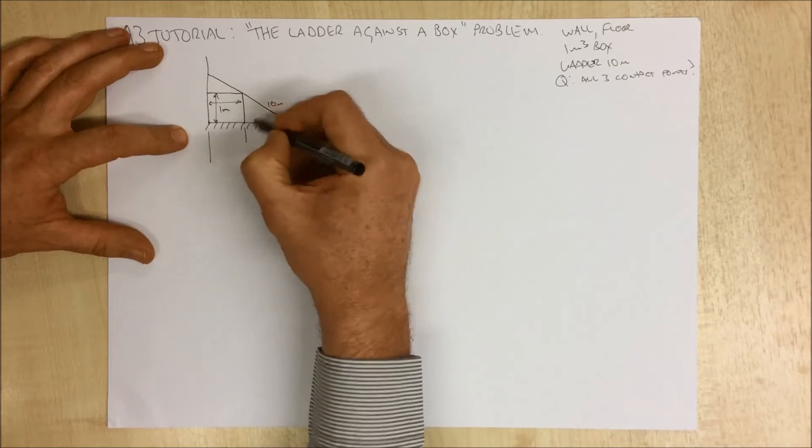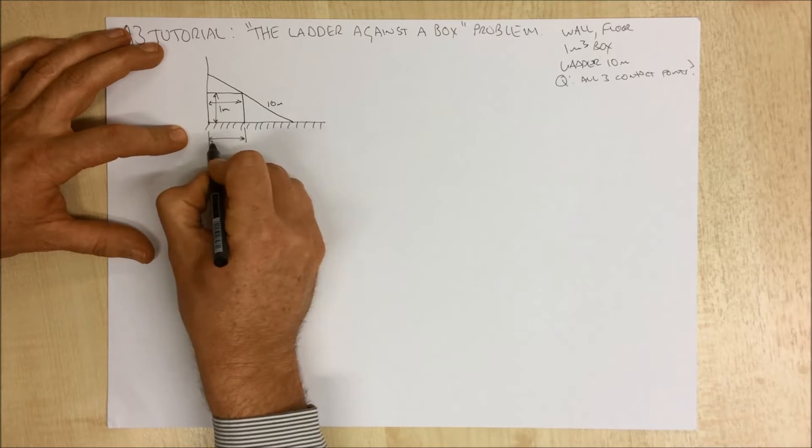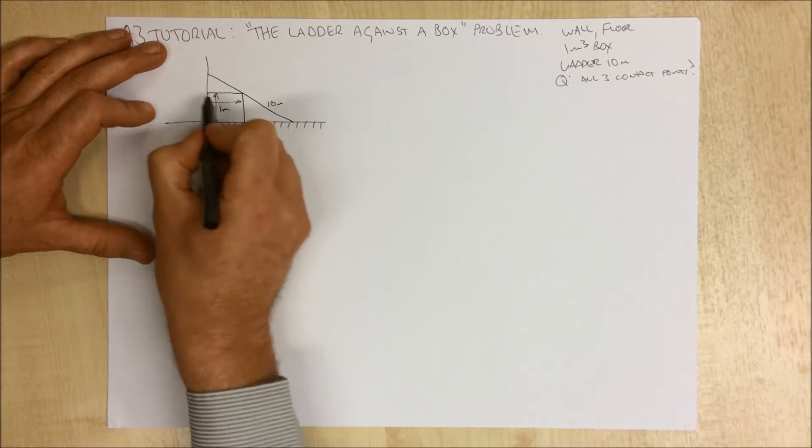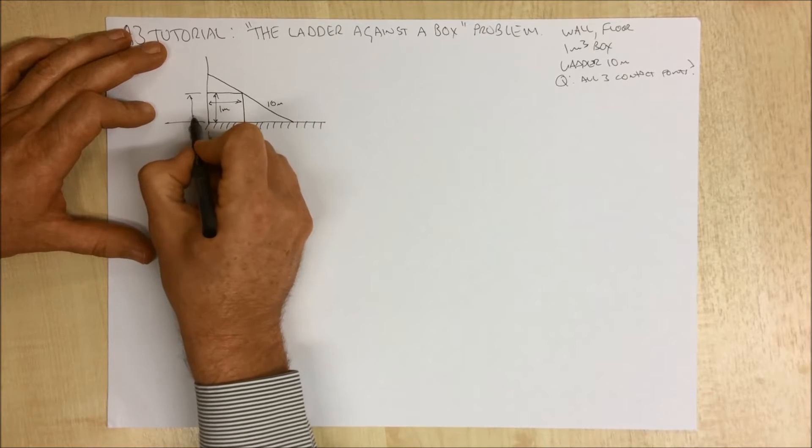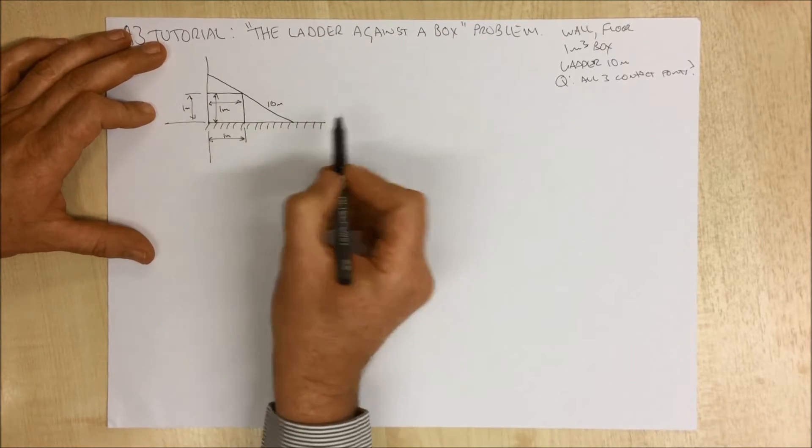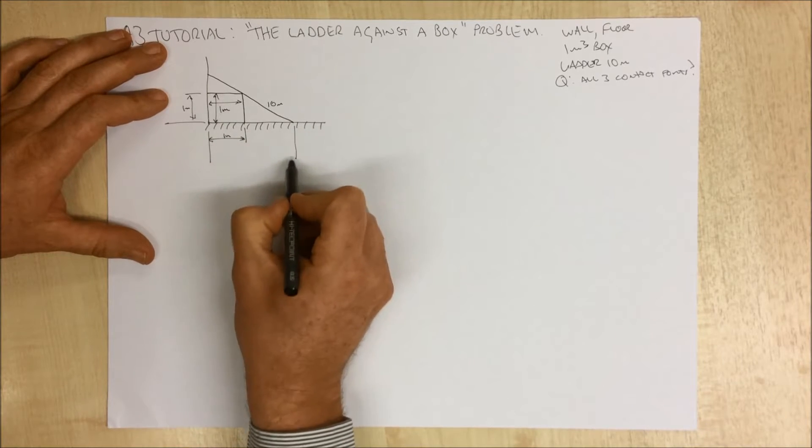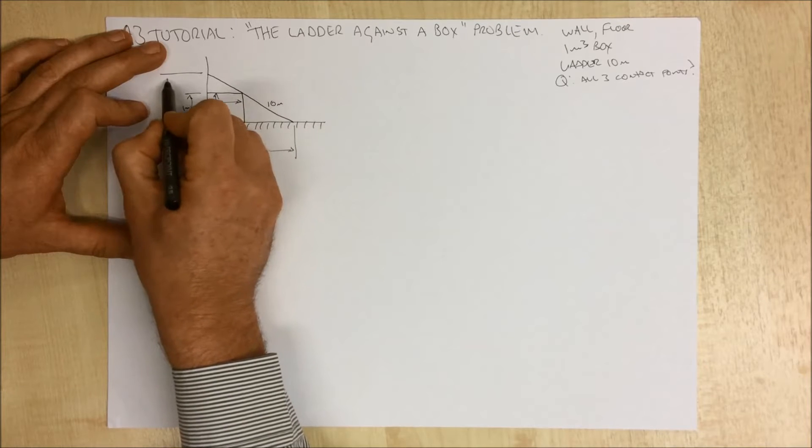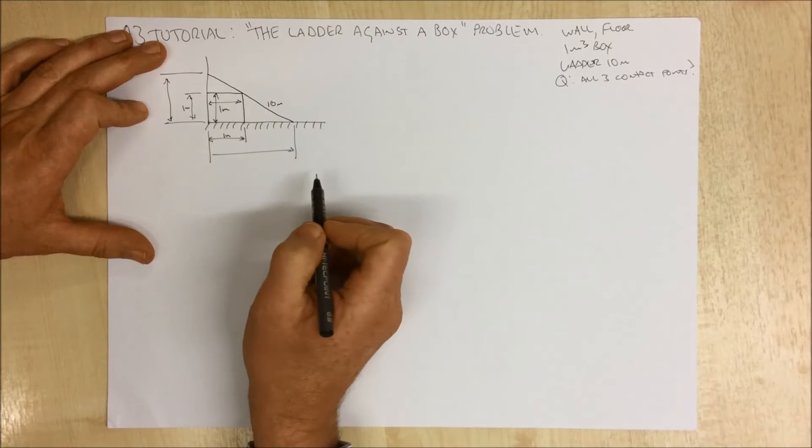We know that that distance there is 1 meter and this distance here is 1 meter, but we do not know what this distance is and we do not know what this distance is. That's what we're trying to find out.